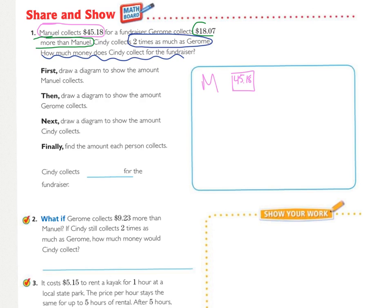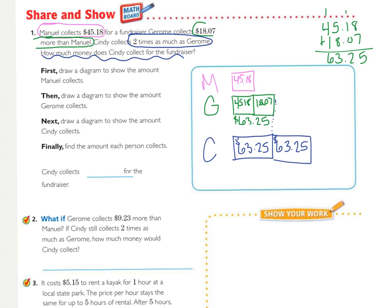Manuel's amount. Jerome's amount. Cindy's amounts, based on Jerome's total. I added them together, and then it's two times that. So, Cindy collects $126.50, and make sure that we can see your decimal.